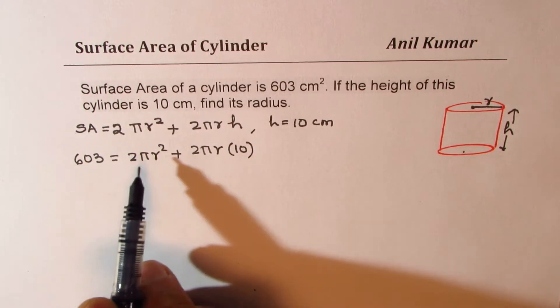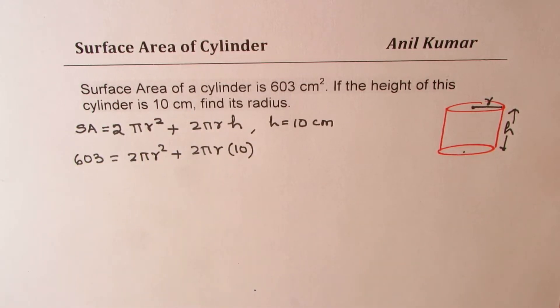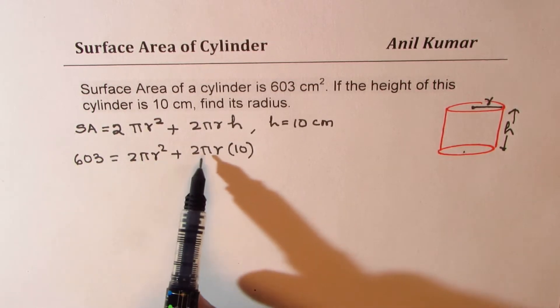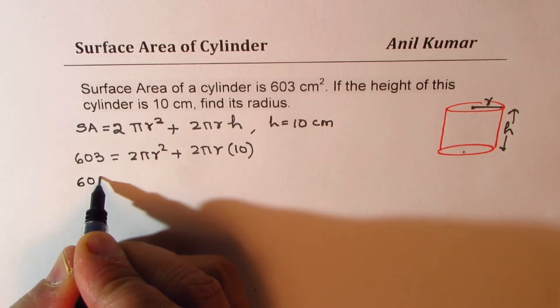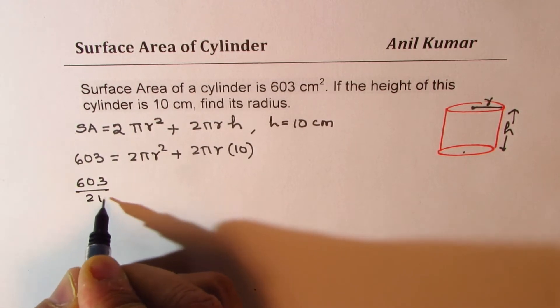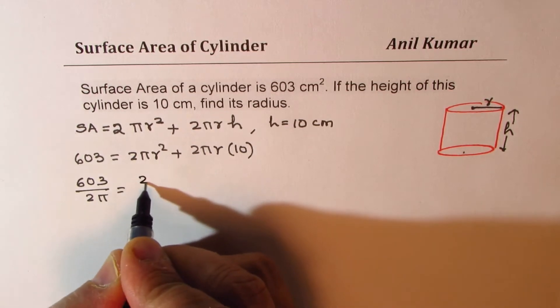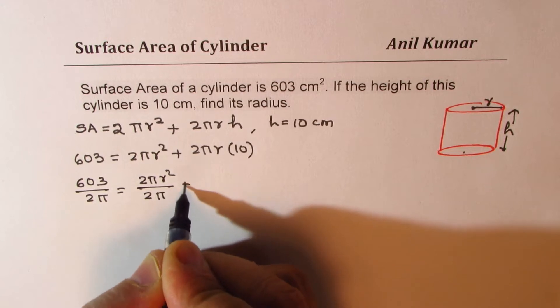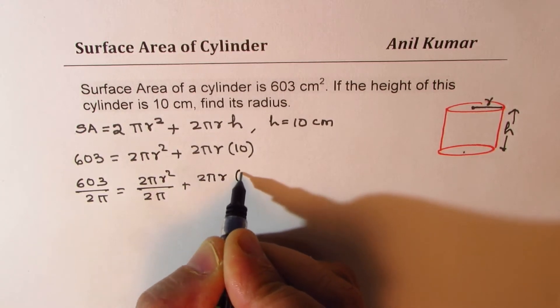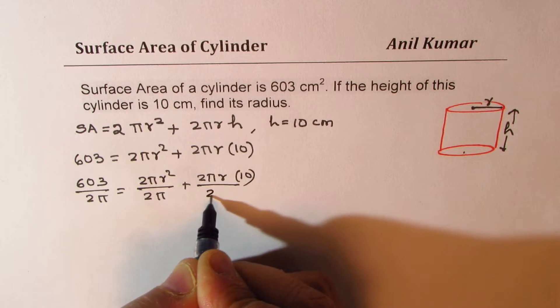We need to solve for r. Now, how can we solve? We have r² and r. That's a very difficult thing. So what can we do? Well, 2π is a number. We can divide everything by 2π. So what do we get? Let's divide everything by 2π. So we get 2πr² divided by 2π plus 2πr times 10 divided by 2π.